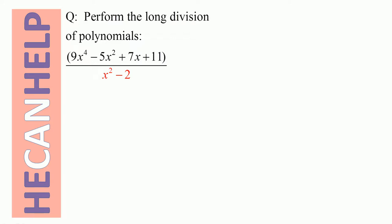Perform the long division of polynomials: 9x to the power of 4, minus 5x squared, plus 7x, plus 11, divided by x squared minus 2.